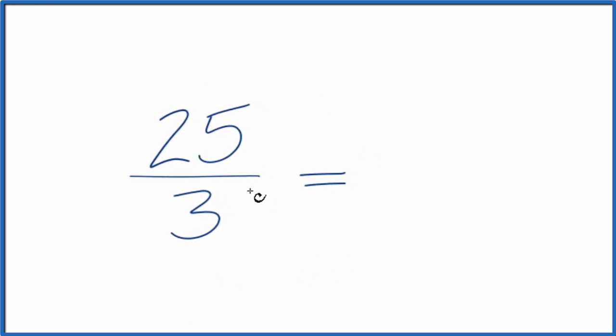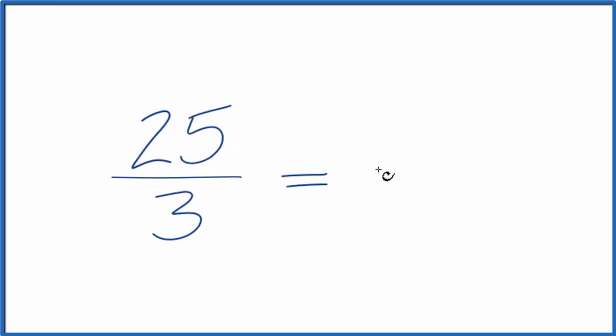This is an improper fraction because we have a numerator that's larger than the denominator. So you could change it to a mixed number. 3 goes into 25 8 times with 1 left over. And then we bring the denominator across. So 25 thirds, that's equal to 8 and 1 third.